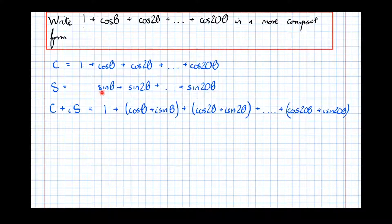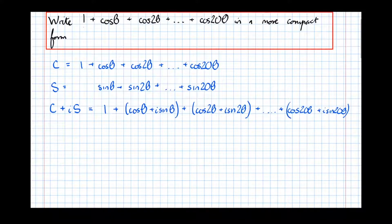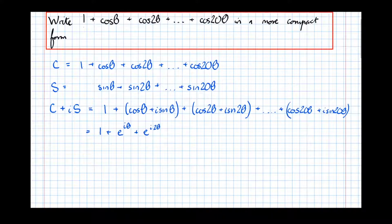The imaginary part of the sequence is the sine series, and the real part is the cosine series, because we've attached an i to the sine terms but nothing to the cosine terms. So the cosine part remains the real part of this expression. We can rewrite that as 1 plus e^(iθ), because e^(iθ) is cos theta plus i sine theta, plus e^(2iθ) plus e^(3iθ) all the way up to e^(20iθ).